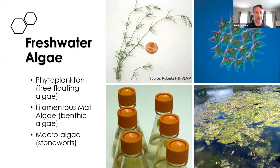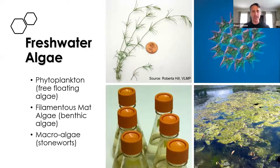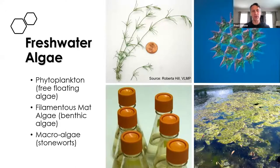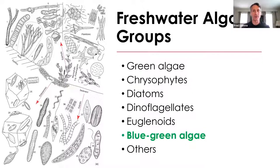When we talk about freshwater algae, specifically for lakes, there are three main types of algae. There are the planktonic phytoplankton — the free-floating algae that can make the water look green or create those surface scums. Then we have the benthic mat algae, which I call the green cotton candy. And then finally, there are a small group of green algae called stoneworts that look like plants, but technically they're algae.